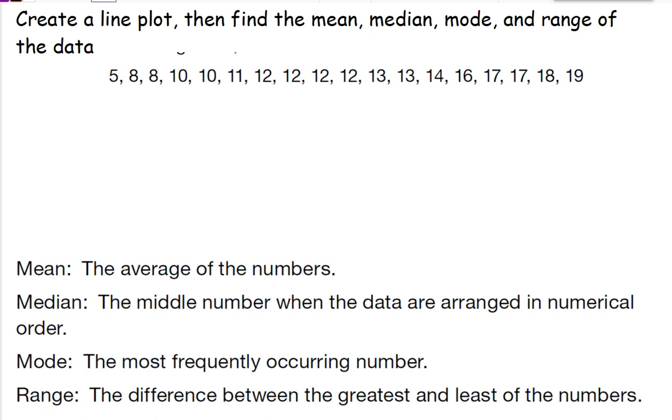When we're trying to graph data, it also helps us to know some other information, and that is the mean, median, mode, and range. Mean is another word for average. Median is the middle number in my set of data. The mode is the most frequently occurring number. And the range is the difference between the greatest and least of the numbers.